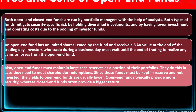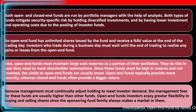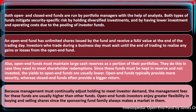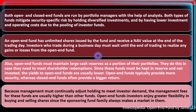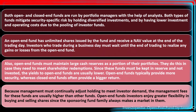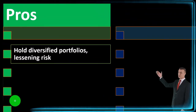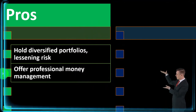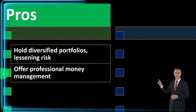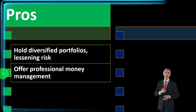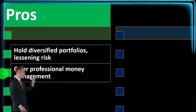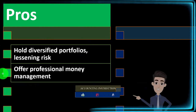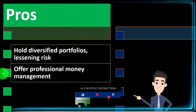Open-end funds typically provide more security, whereas closed-end funds often provide a bigger return. Because management must continually adjust holdings to meet investor demand, management fees are usually higher than for other funds. In terms of pros: they hold diversified portfolios, lessening risk; they allow smaller investment amounts while still achieving diversification; they offer professional money management — though fees vary depending on how actively managed they are; and they require low investment minimums to get started.